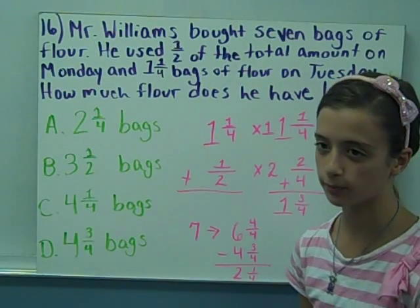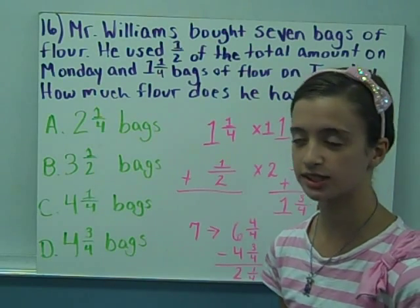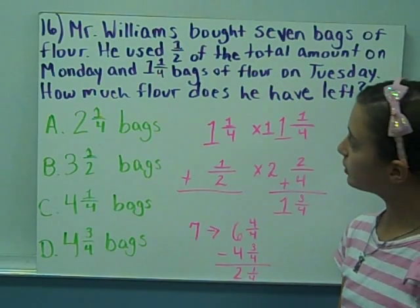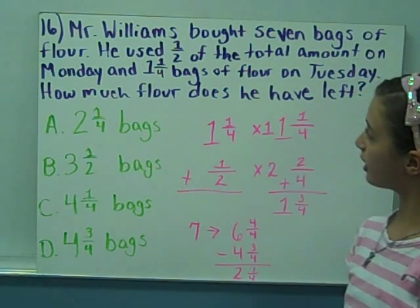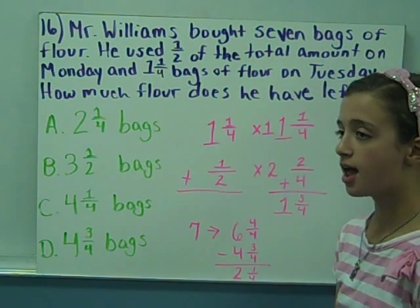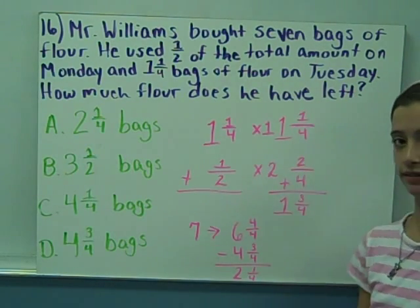This is another EOG test prep review by the Creative Compact Math class. I was assigned number 16, which was Mr. Williams bought seven bags of flour. He used one-half of the total amount on Monday and one-and-one-fourth bags of flour on Tuesday. How much flour does he have left?